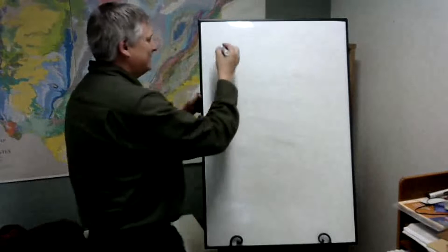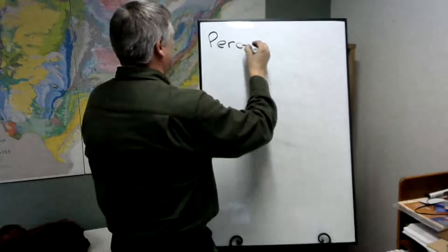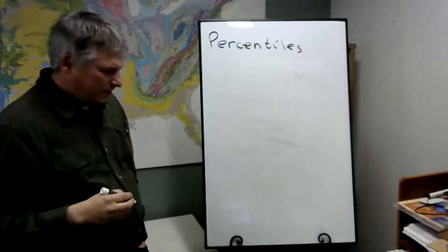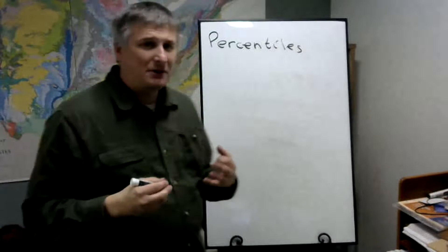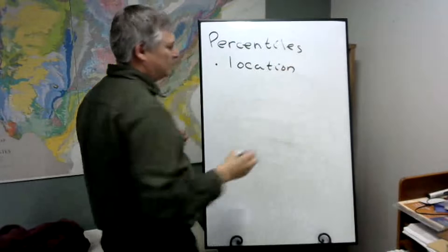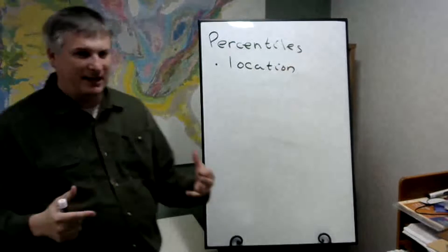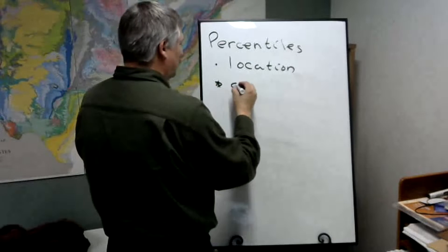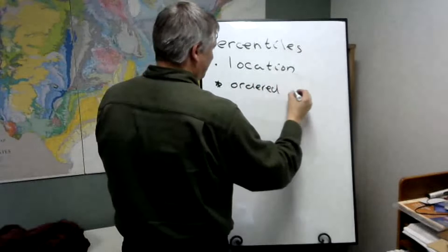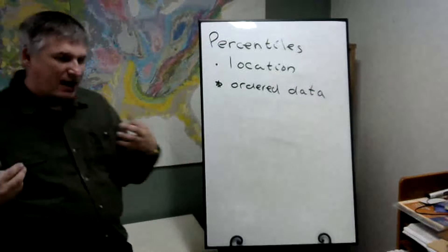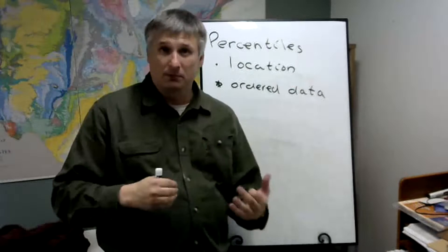So next we're going to look at percentiles. We want to come up with a location that tells us how much of our data is below a certain point. Now there's a key thing here: the data is ordered.